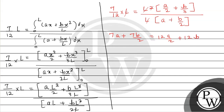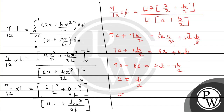Expanding: 7A + 7B/2 = 6A + 4B. Moving terms: 7A − 6A = 4B − 7B/2, so A = B/2. Multiplying both sides by 2, we get the relation 2A = B. This is the required relation between A and B.